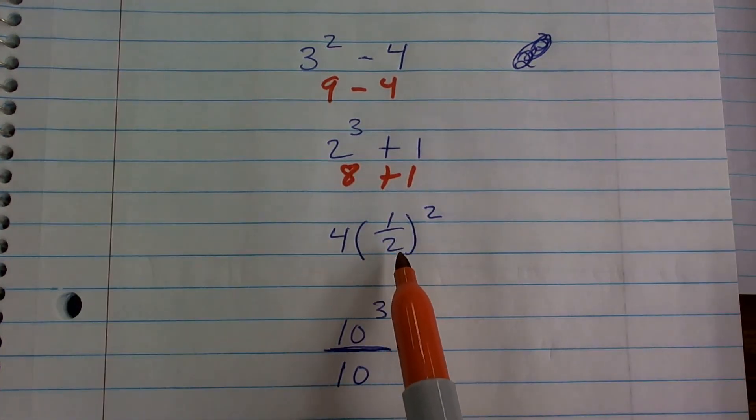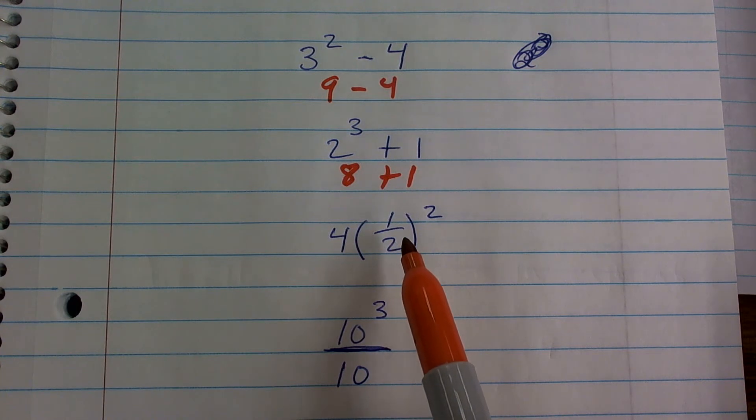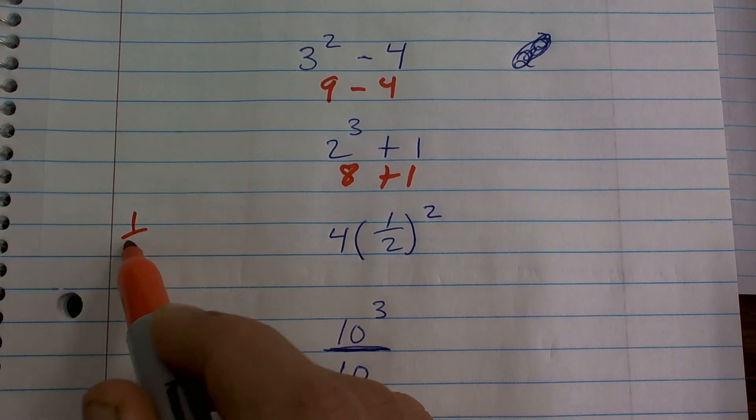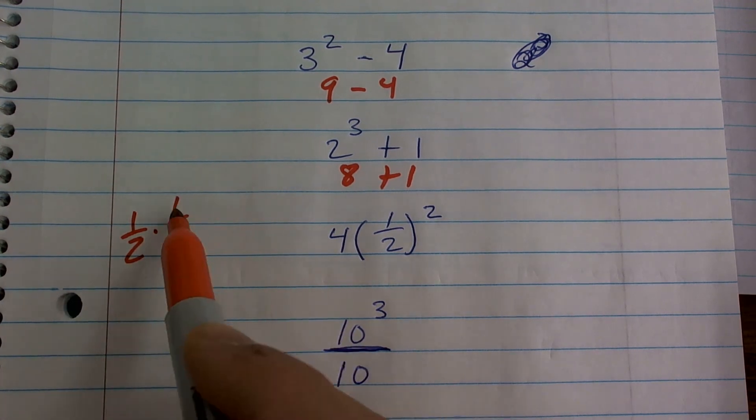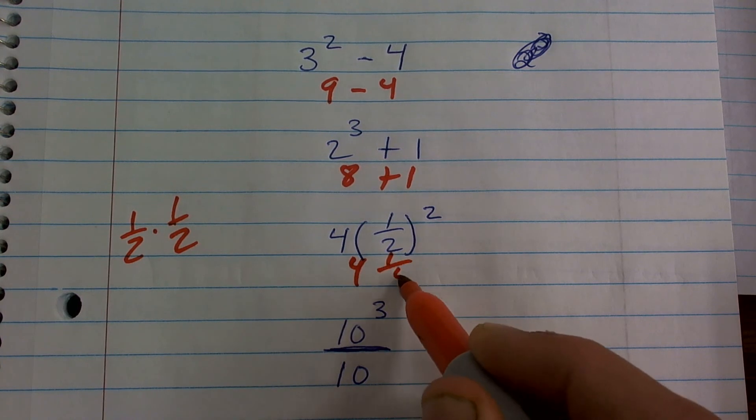Here I have one-half squared, so it's going to be one-half times one-half. Remember, when multiplying fractions, multiply the numerator across and then multiply the denominator across. So 1 times 1 is 1, 2 times 2 is 4. So I'm going to have 4 times one-fourth.